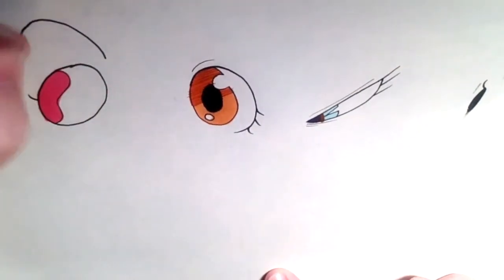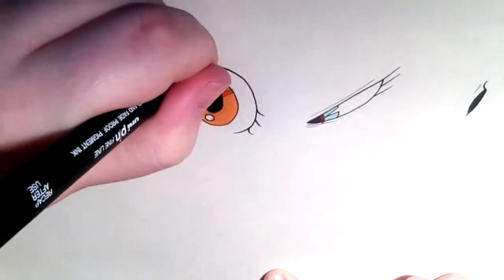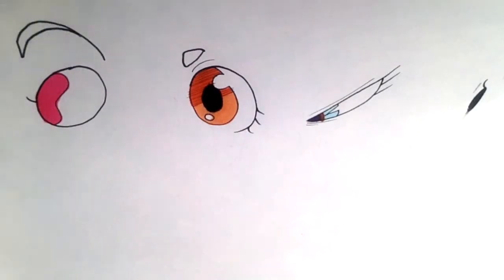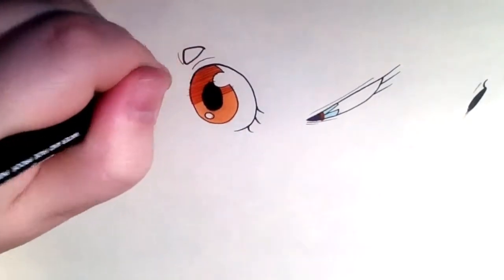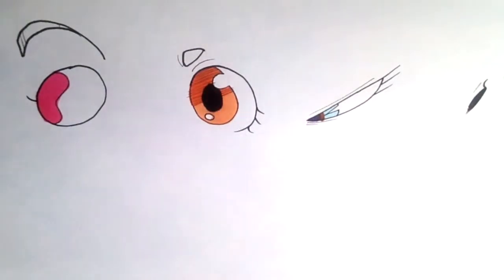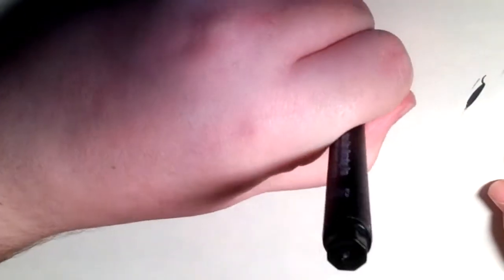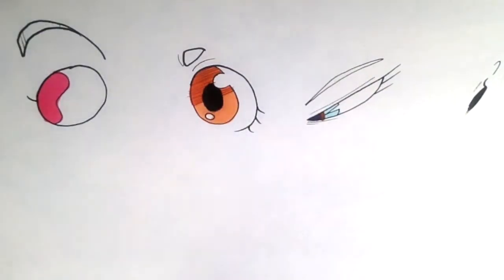Also important to remember are eyebrows. Certain styles don't need eyebrows, but if you are adding them in, then it's important to know the kind of character that your character has. Generally, stronger characters will have thicker eyebrows, and more sensitive characters will have thinner eyebrows. That's not necessarily always the case. I mean, I have pretty thick eyebrows, and I'm not strong at all.